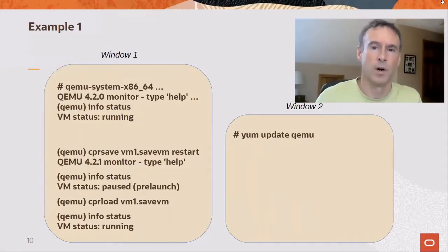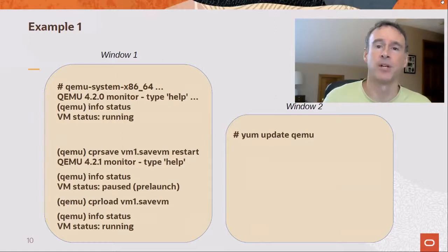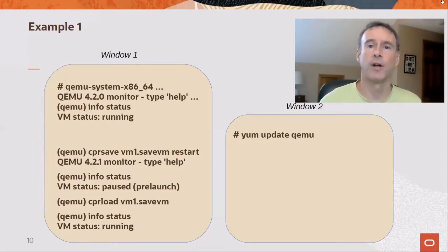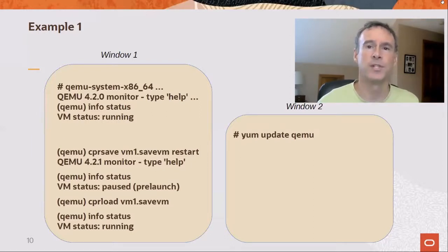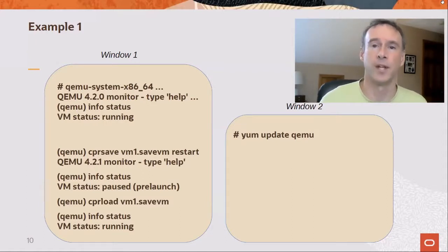Here's an example using the interactive monitor. In window one on the left, we start QEMU. The status command shows that the guest is running. In window two on the right, we use yum to update QEMU on disk. This does not affect the running QEMU process and the guest is still live and running. On the left, we issue the CPR save command. It execs the new QEMU binary and returns. Status shows the VM is in the pre-launch state. To finish off, we issue CPR load, the guest resumes, and the update is complete.